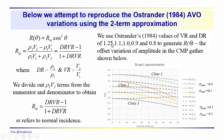He uses a constant ratio, velocity ratio and density ratio of 1.25, 1.1, 1, 0, 0.9, and 0.8 to generate these different r of theta plots.